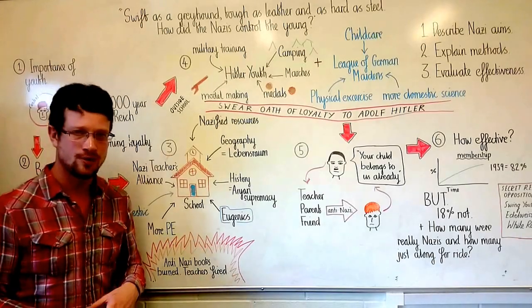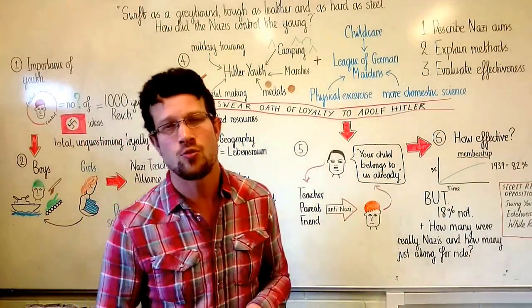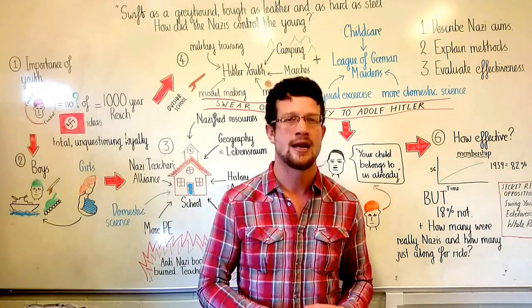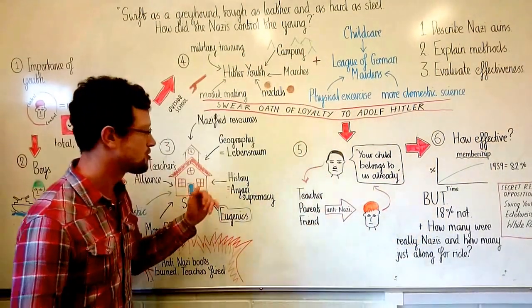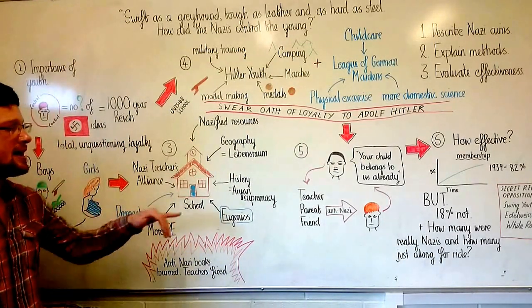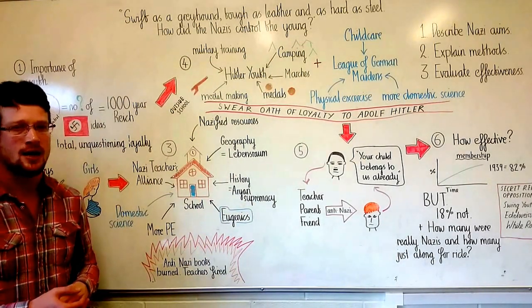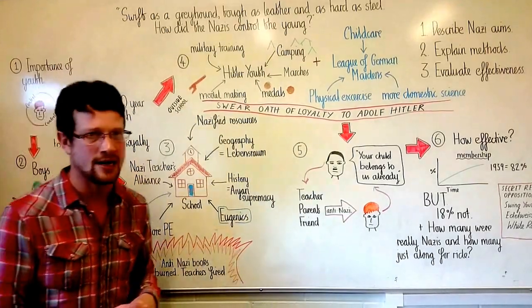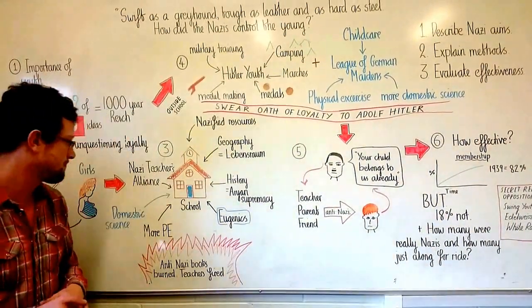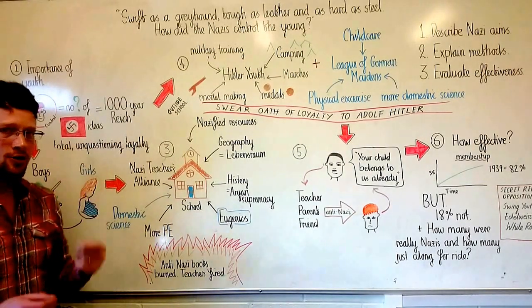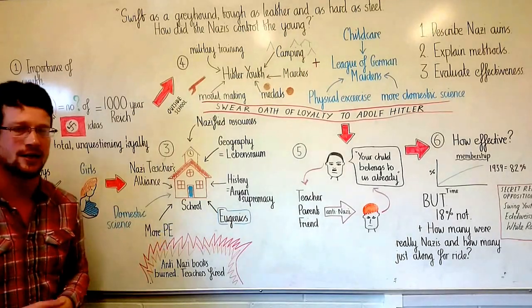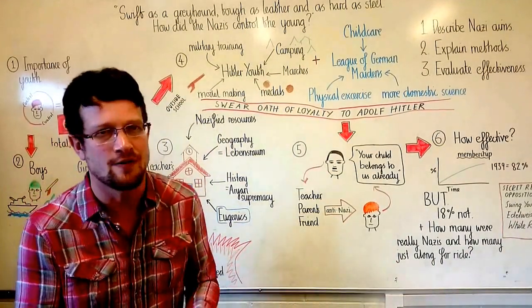Geography was changed. In this, students would be taught about the lands taken away from Germany in the Treaty of Versailles and the importance of getting this back. History was also changed. In this, Germans were taught about the innate supremacy of the Aryan race and were taught lies about how other races had stolen from the Aryans what rightfully belonged to them.